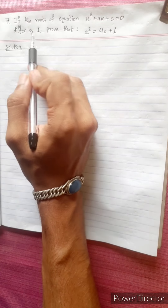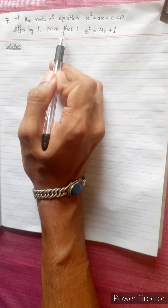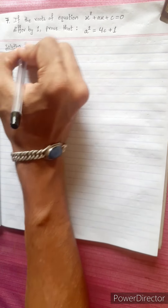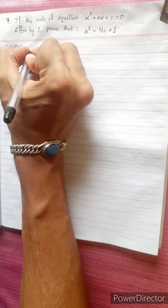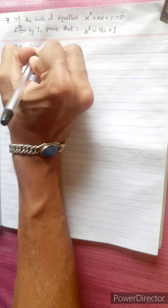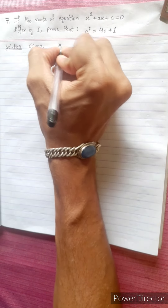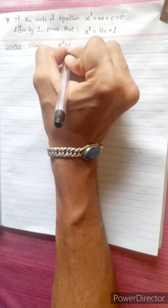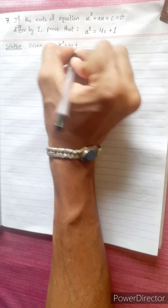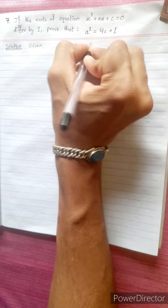If the roots of the equation differ by 1, prove that A² = 4C + 1. We will start. The equation is x² + Ax + C = 0. This is equation 1.